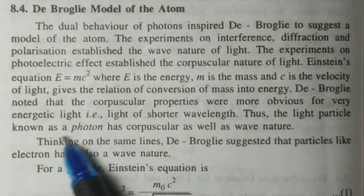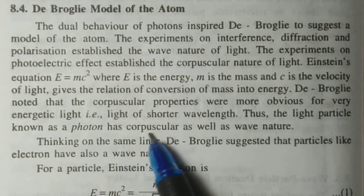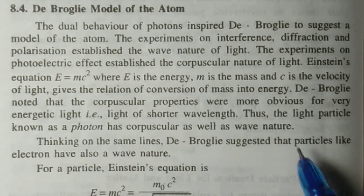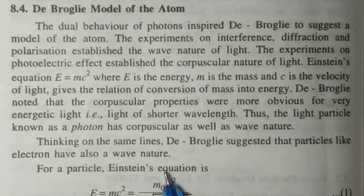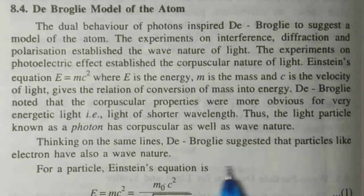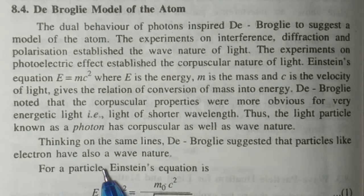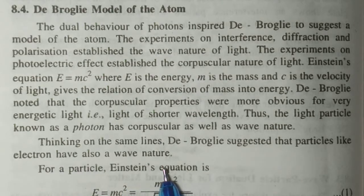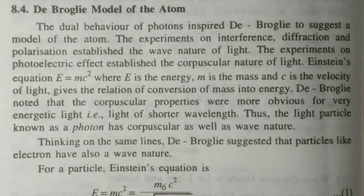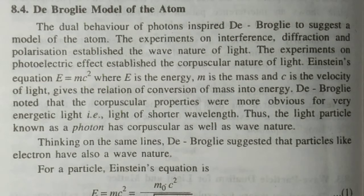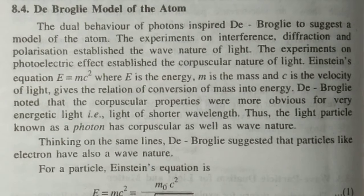De Broglie noted that the corpuscular properties were more obvious for very energetic light, that is light of shorter wavelength. The light particle known as photon has corpuscular as well as wave nature. Thinking on the same lines, de Broglie suggested that particles like electron also have a wave nature.